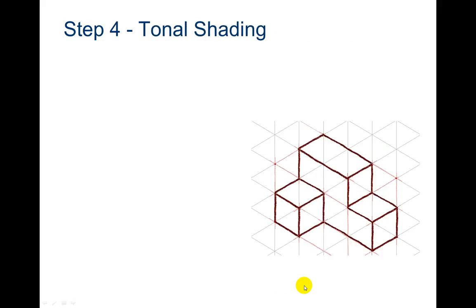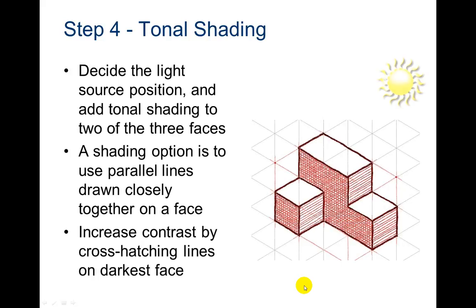Now it's time to tonal shade. Notice on this one, we've got some horizontal lines. And then they've got actually some diagonal lines in there as well. So decide the light source position and add tonal shading to two of the three faces. A shading option is to use parallel lines draw closely together on a face, increase contrast by cross-hatching the lines on the darkest face. So you can even go diagonal or horizontal or vertical.